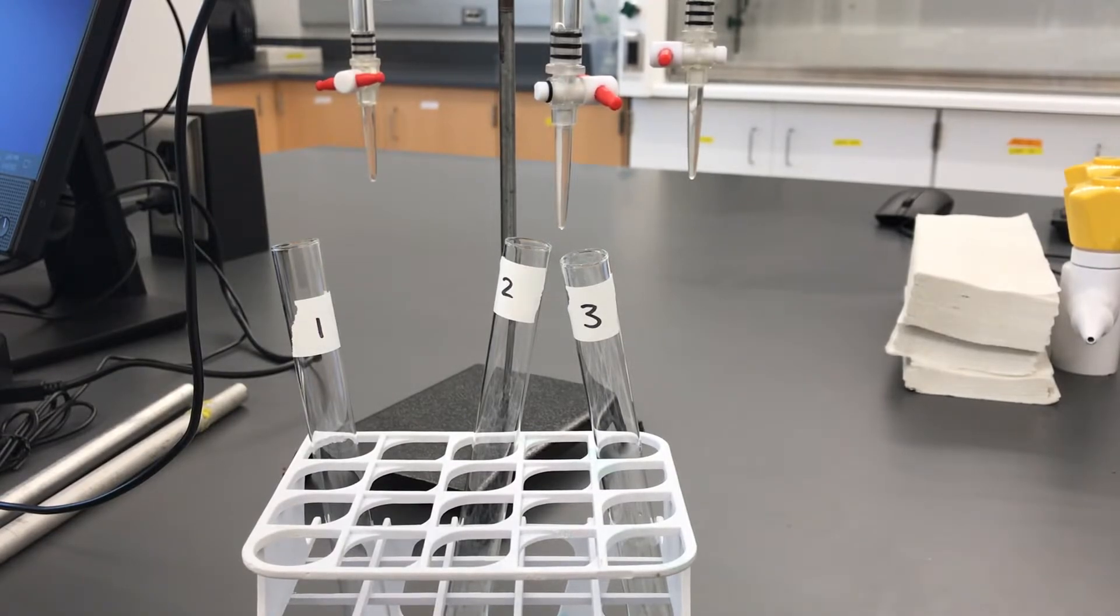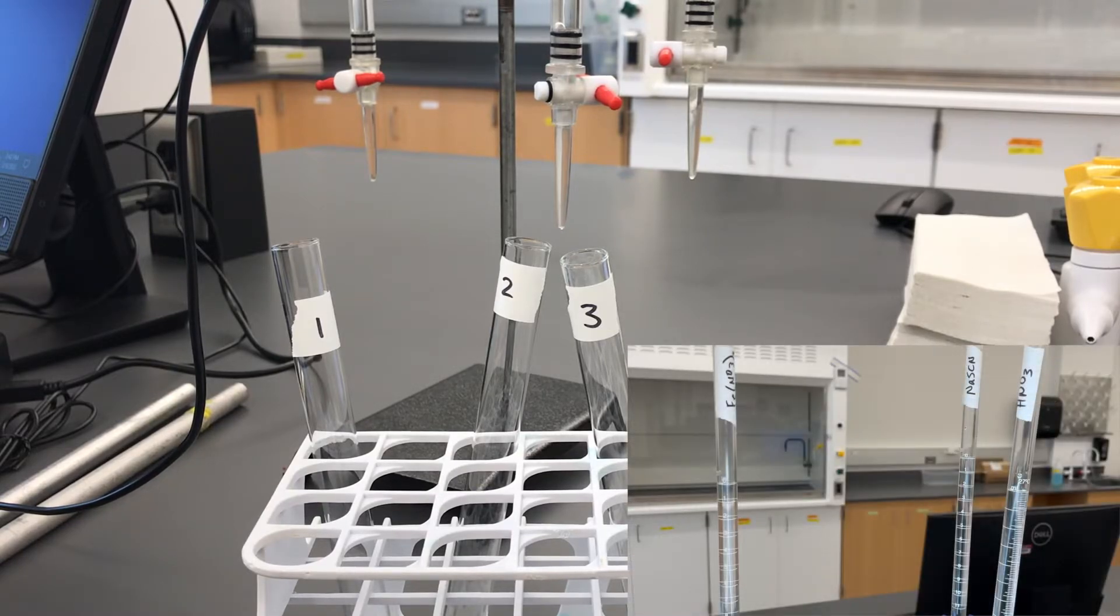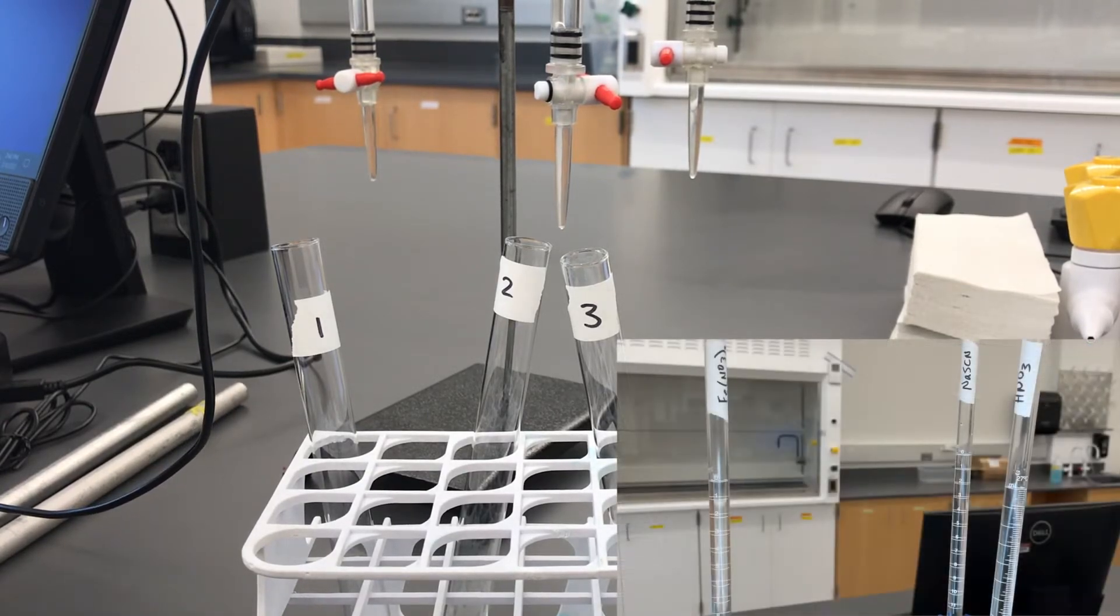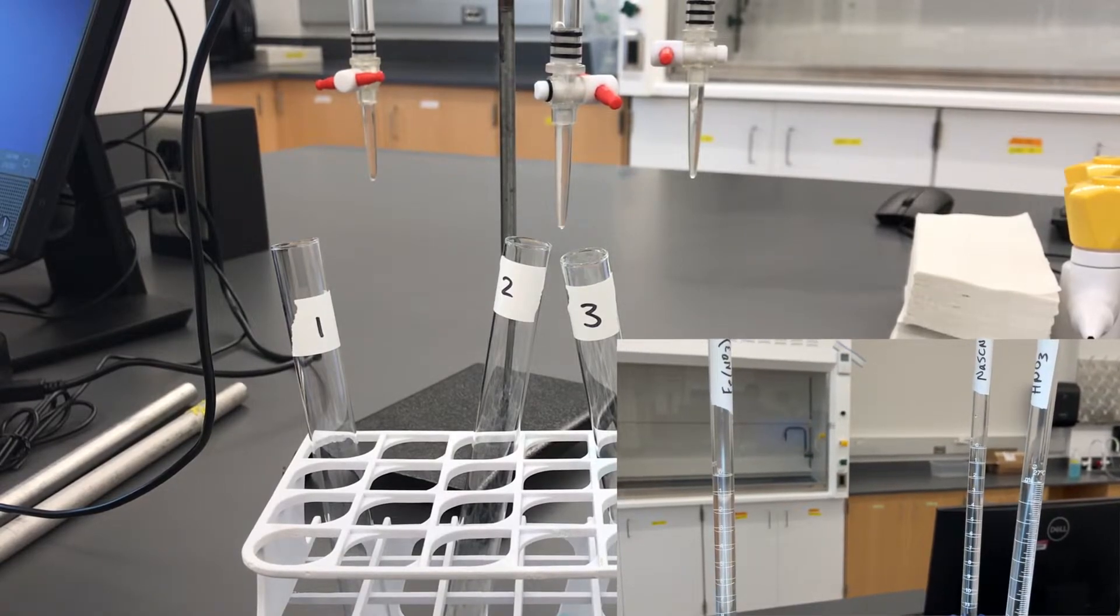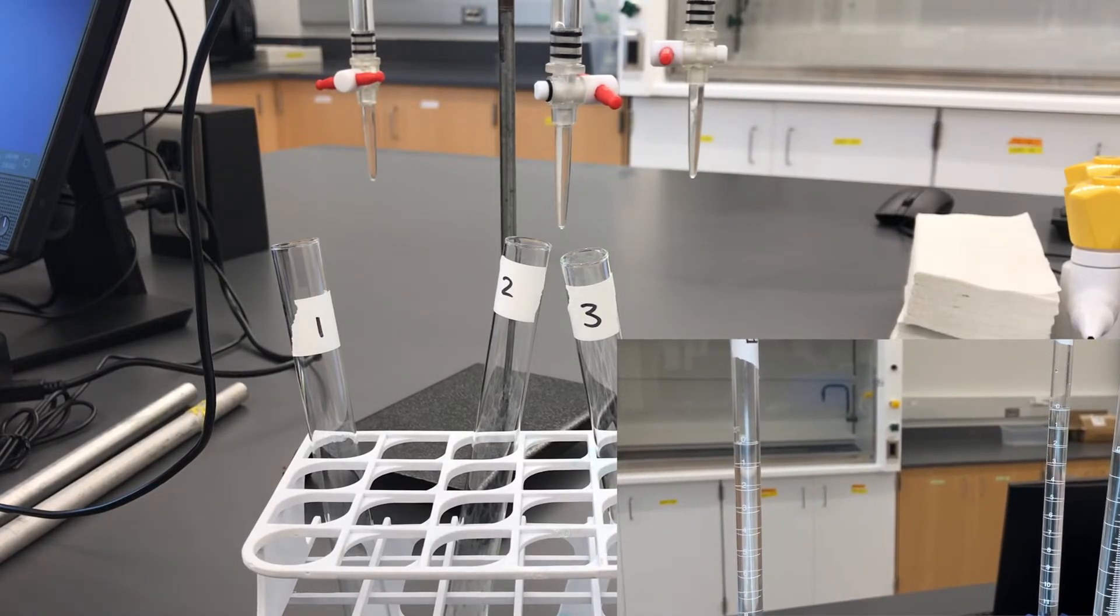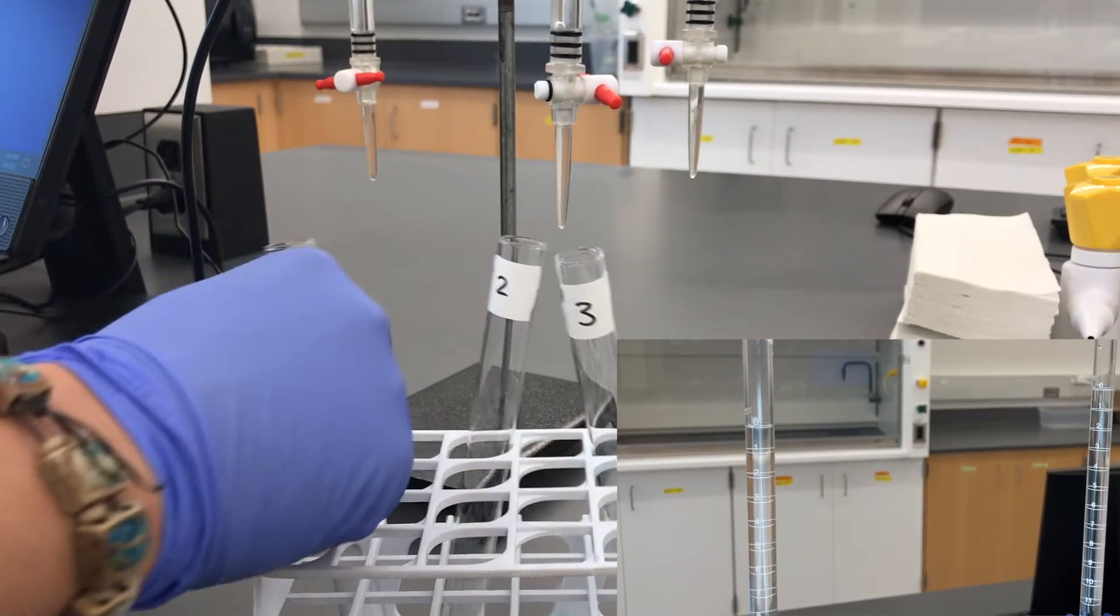We can now determine the equilibrium content of our iron complex formation reaction by making three more solutions. We have three labeled test tubes, one, two, and three. And this time we'll use the less concentrated ferric nitrate, and again nitric acid, and our sodium thiocyanate. This time, however, we have to know exactly how much of each reagent we are adding as compared to last time. So we will need to use some additional burets for dispensing the nitric acid and the ferric nitrate. So to make our solutions, we need to first add about five mils of our ferric nitrate to each test tube.